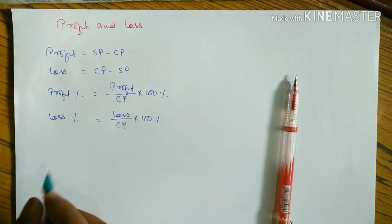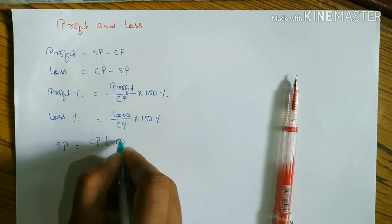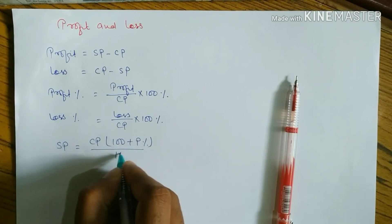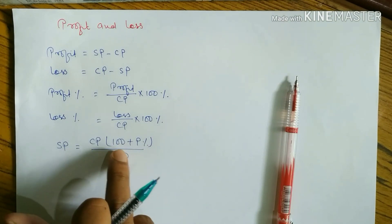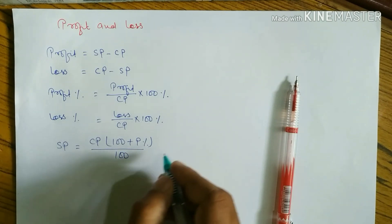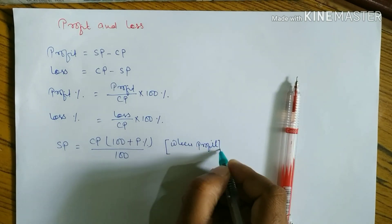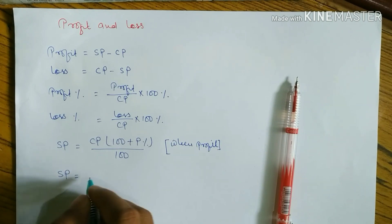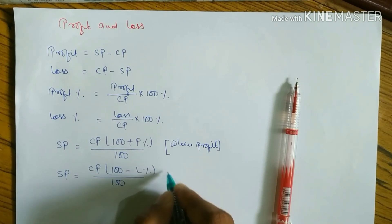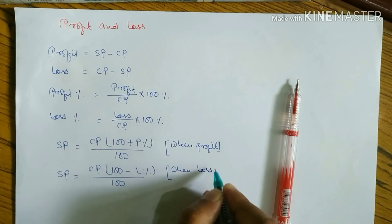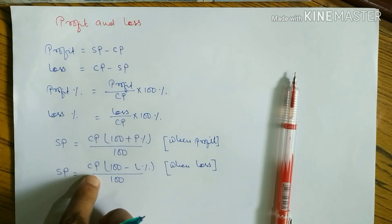The next formula is for SP. When cost price and profit percent are given, we can find SP using: SP = CP × (100 + Profit%) / 100. When there is a loss, the formula is: SP = CP × (100 − Loss%) / 100.